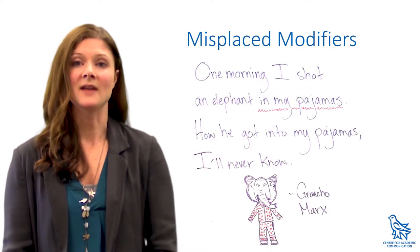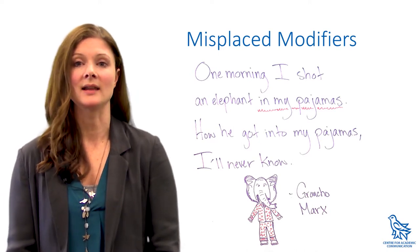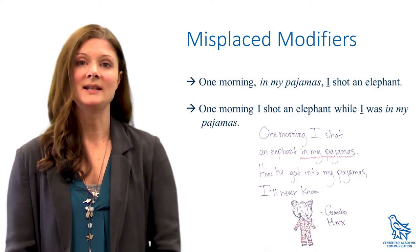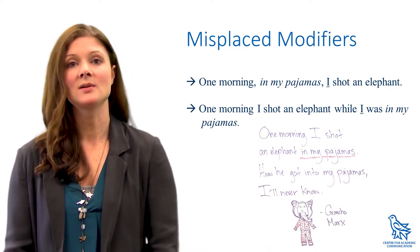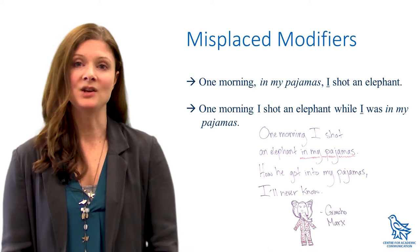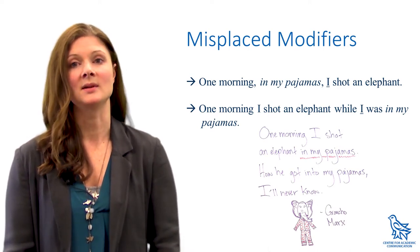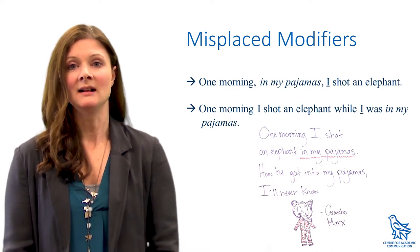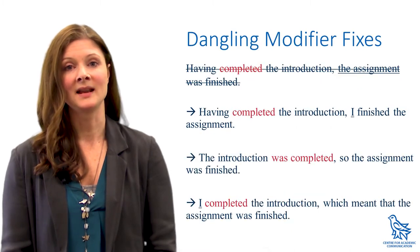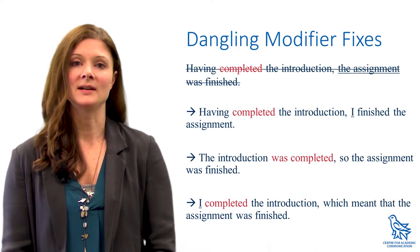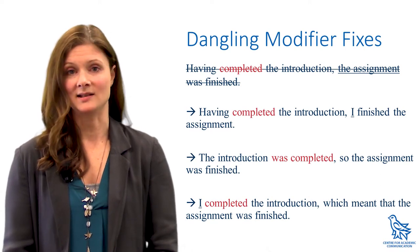In Groucho Marx's famous joke, the phrase "in my pajamas" is modifying what it comes directly after: elephant. To avoid dangling and misplaced modifiers, make sure that your modifiers — especially those starting with an -ing word — and your prepositional phrases are accurately placed and as close as possible to whatever they're modifying, and that the subjects of your verbs are actually present in the sentence and 100% clear. As you can see, there are usually a few different ways that you can reorganize for better clarity, so choose the one that sounds best to you.